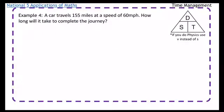Right. Example 4. A car travels 155 miles at a speed of 60 miles per hour. How long did it take to complete the journey? So again, we're looking for time. So T equals D over S. T equals, S equals, and T equals.